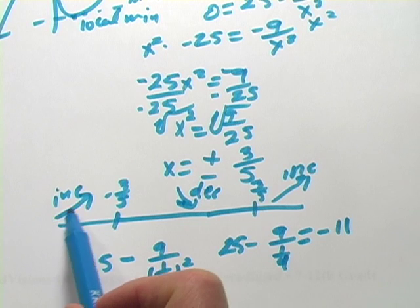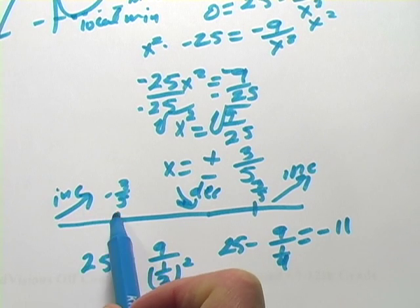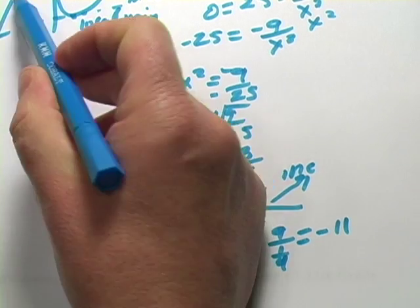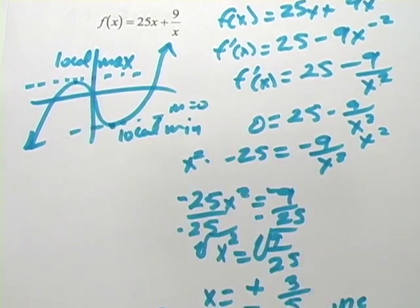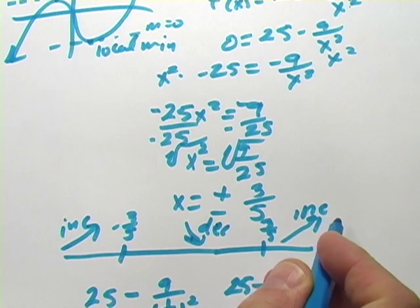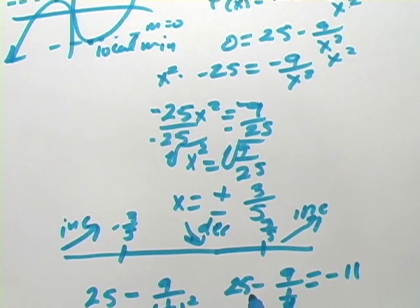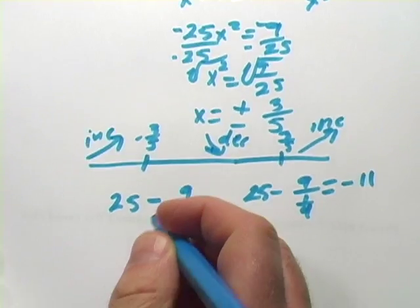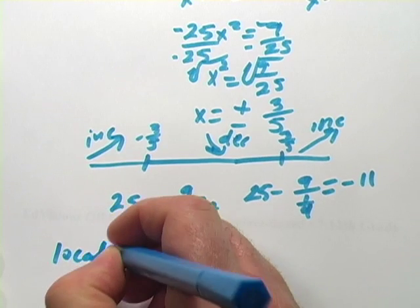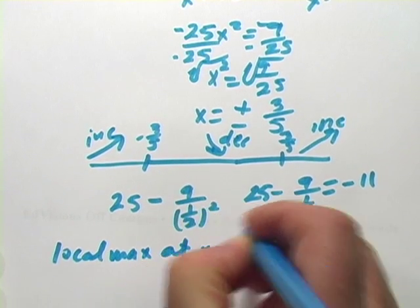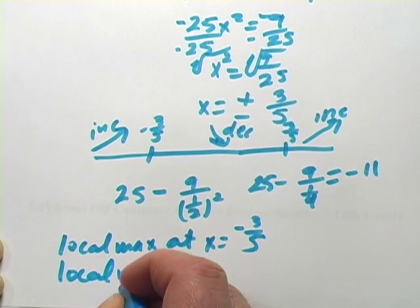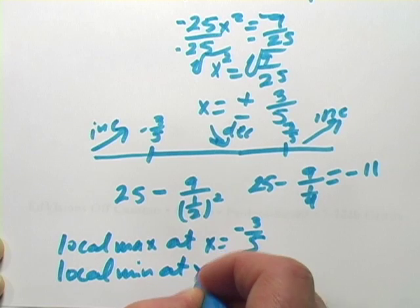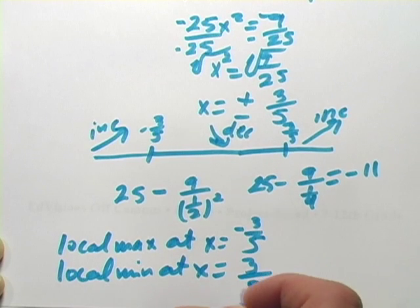So if something is increased, the function is increasing to the left of it and decreasing to the right, we have, just like in here, a local max. If something is decreasing to the left and increasing to the right, it's a local min. So the answer for this one would be a local max at x equals negative 3 fifths and a local min at x equals 3 fifths.